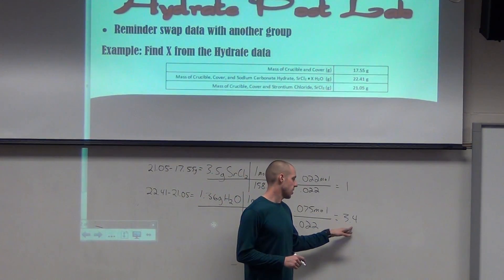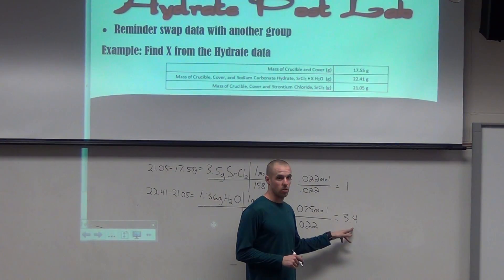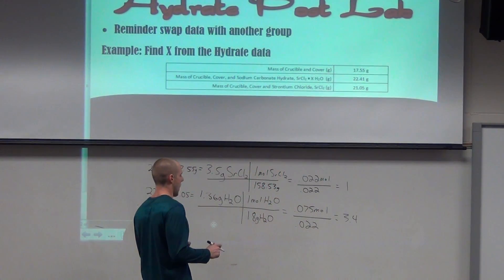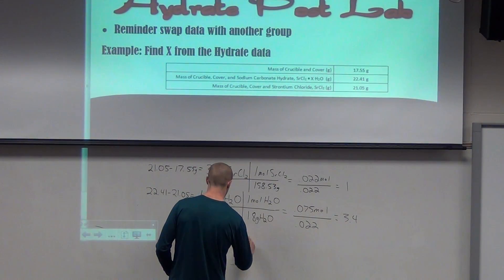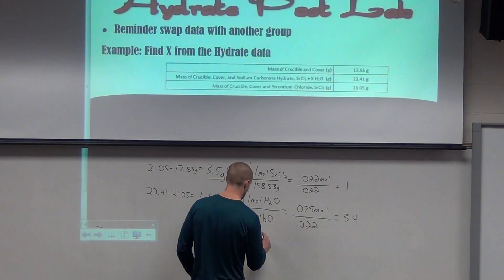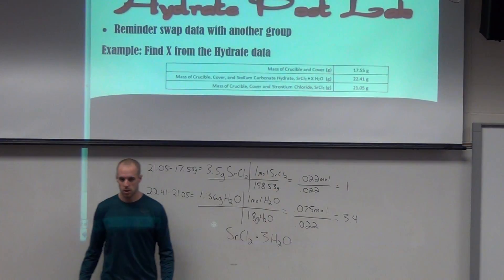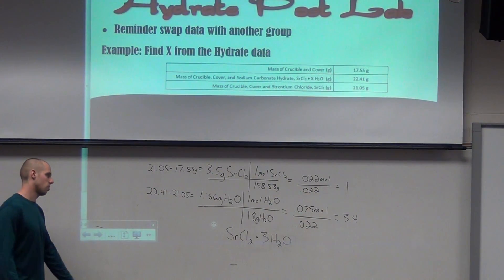The nearest whole number here is 3. So the problem is asking us to solve for x — we'd say x equals 3, or the formula for this compound would be strontium chloride with 3 H₂O's, or strontium chloride trihydrate.